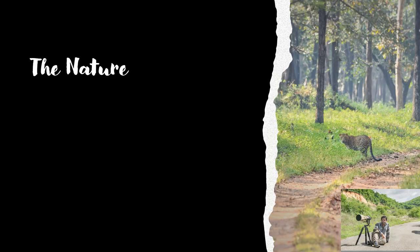Now let us learn about the nature of leopards. Like their elder cousins tigers, leopards are also solitary animals. Only during the reproduction period do male and female come closer. The female leopard mostly takes care of her cubs. Cubs stay with the mother until they are 2 to 2.5 years of age — after that, they establish their own territory. They are very territorial and mark their territory by spraying urine, which conveys ownership, acts as a warning to invading guests, and also acts as a messenger between adult males and females when they are ready to mate.